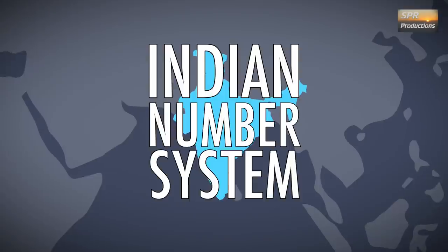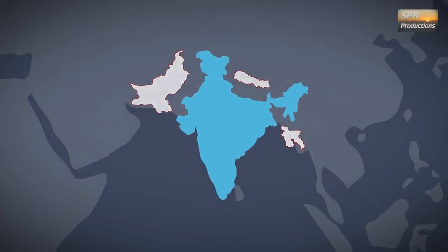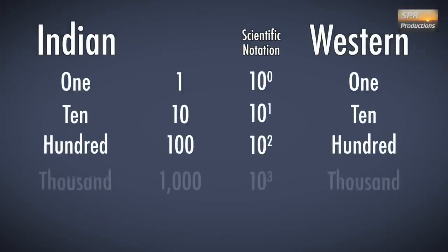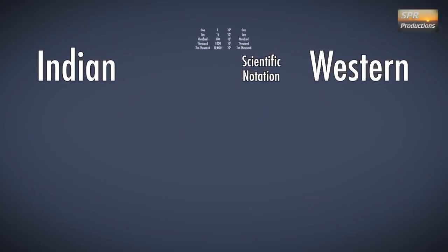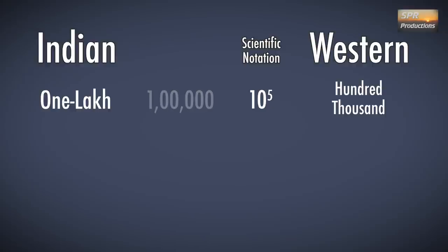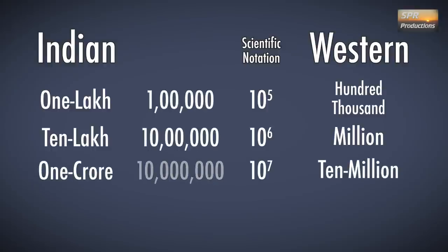The system that is commonly used by India and some of its neighbors today looks something like this. While the rest of the world calls 10 raised to 5 — that is 1 followed by 5 zeros — 100,000, we call it 1 lakh. Then 1 million is referred to as 10 lakhs.